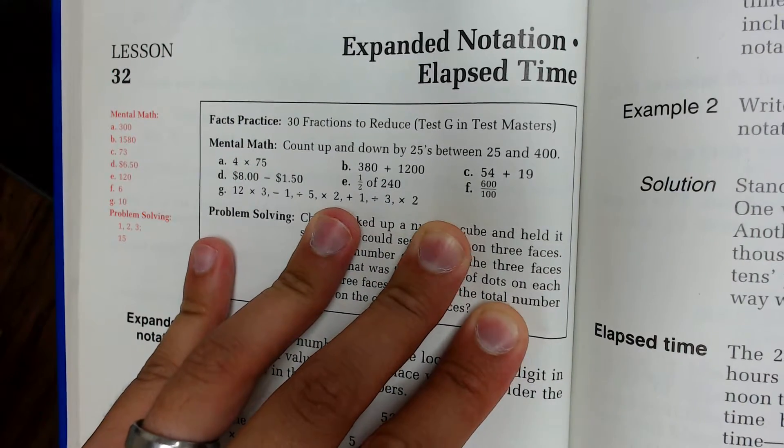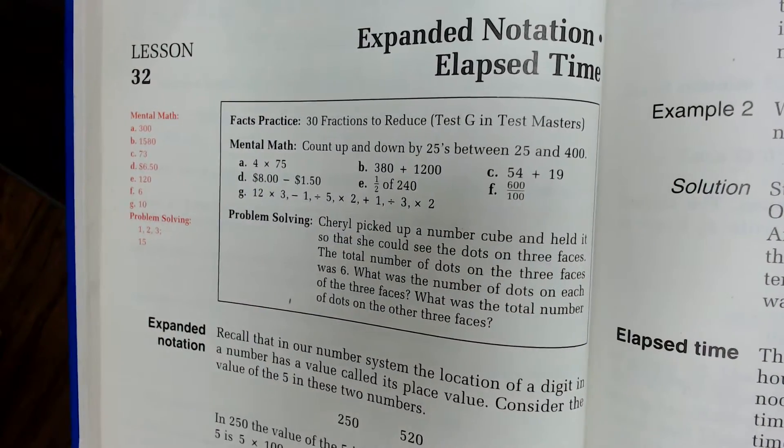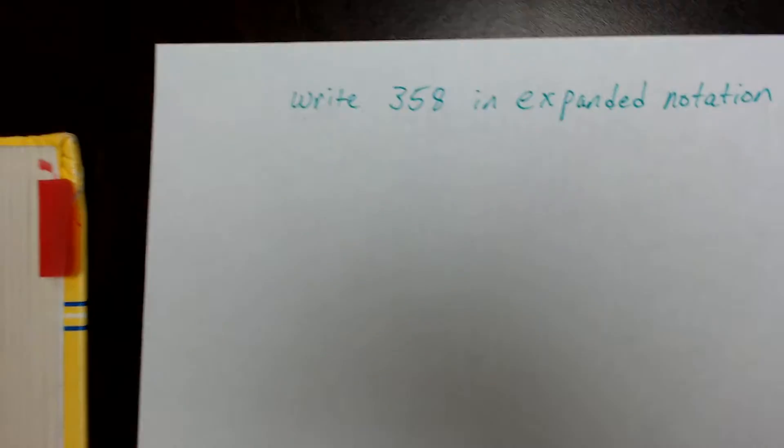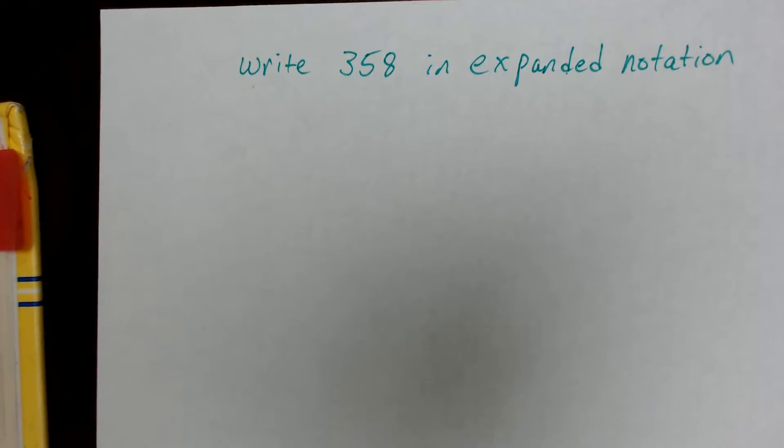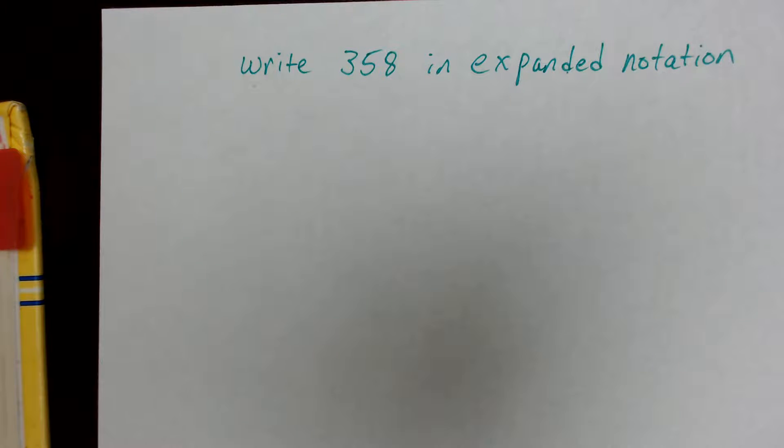Lesson 32, Expanded Notation and Elapsed Time. Expanded notation is actually a pretty simple concept once you know what the words expanded notation means. It's just applying place value to numbers within a number.